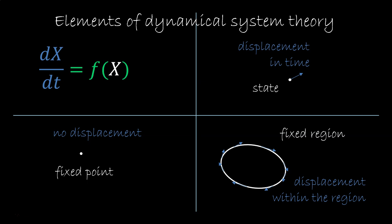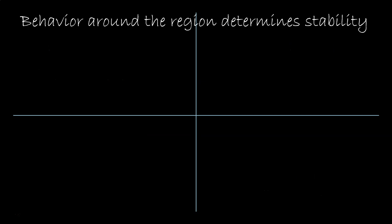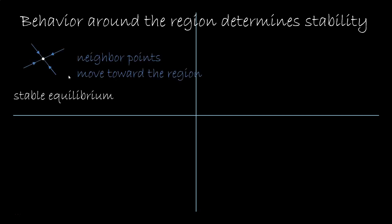Fixed regions are the most important feature of a dynamical system. Now we look at the behavior around the region, the second derivative at the point, to see whether the region is stable. What does that mean? If all the points around the region move toward the region, then the region is stable. Small fluctuations will become smaller.